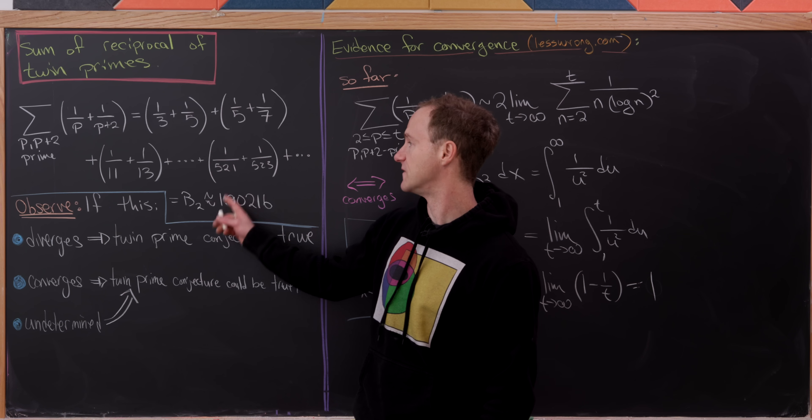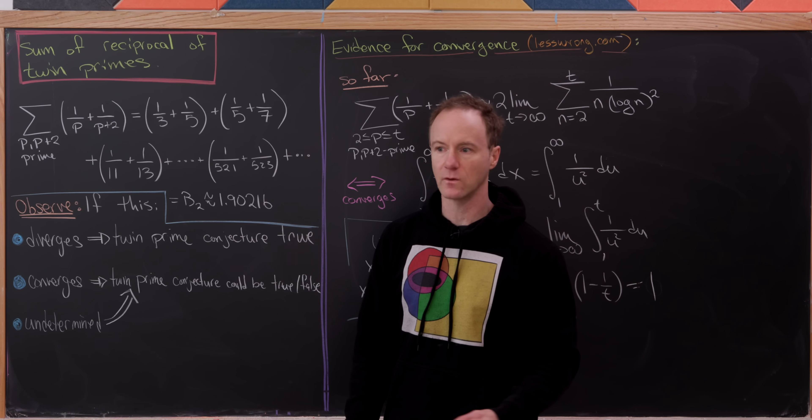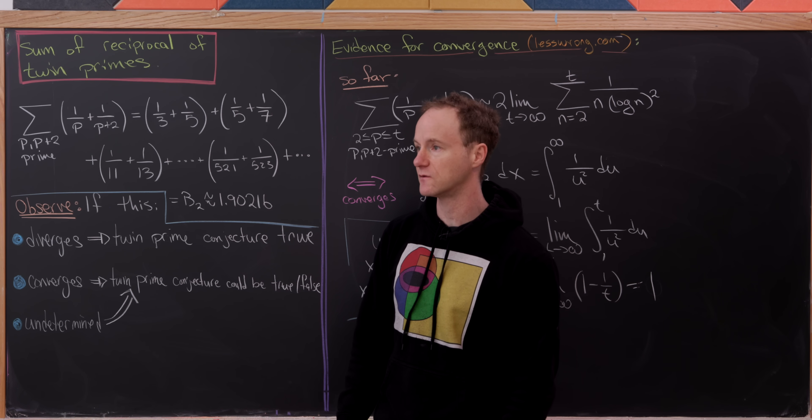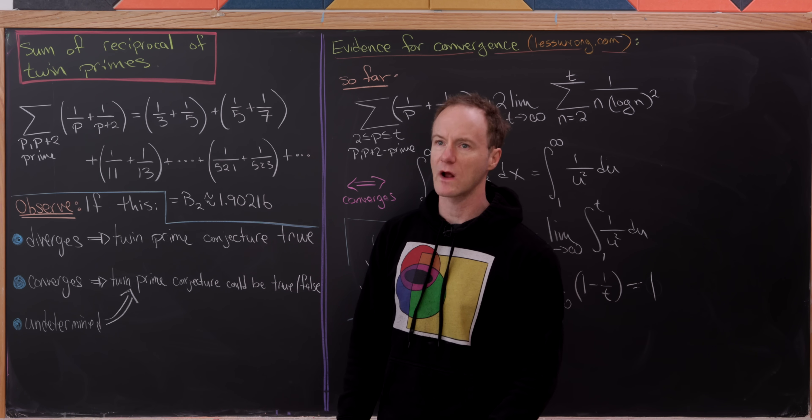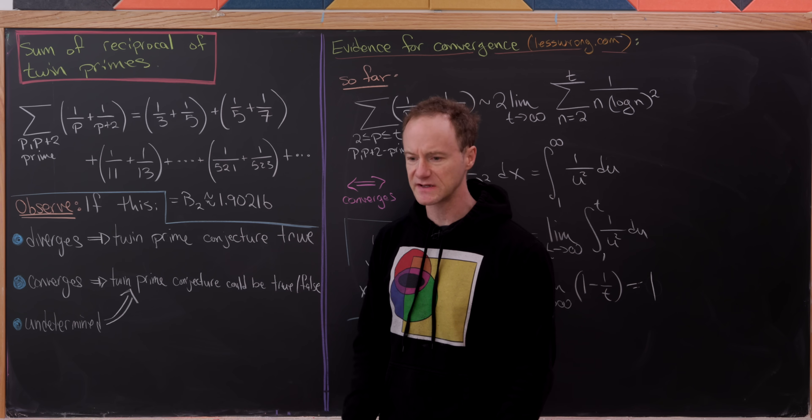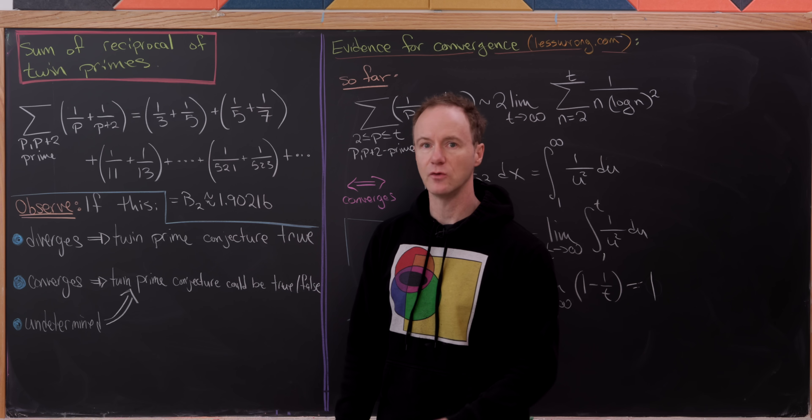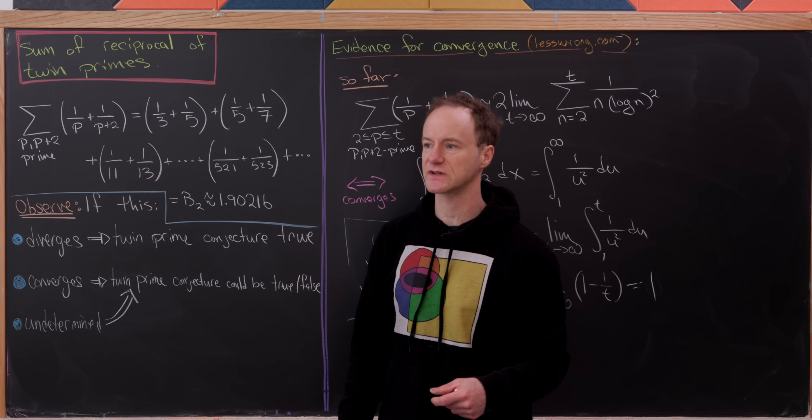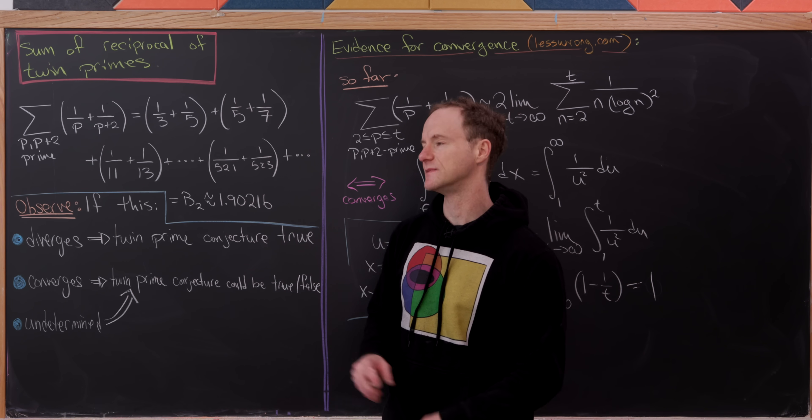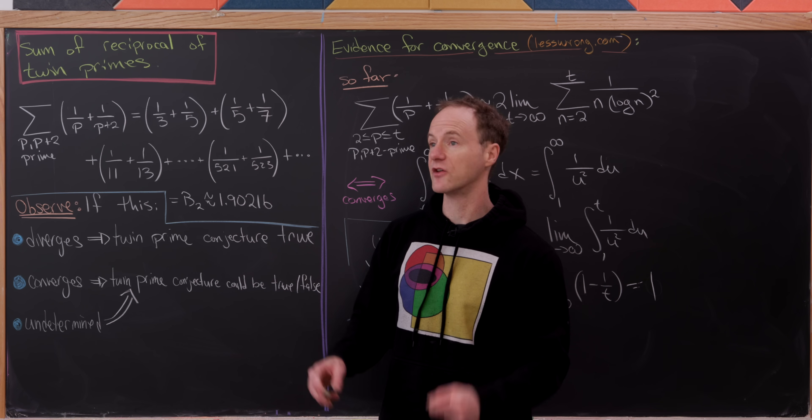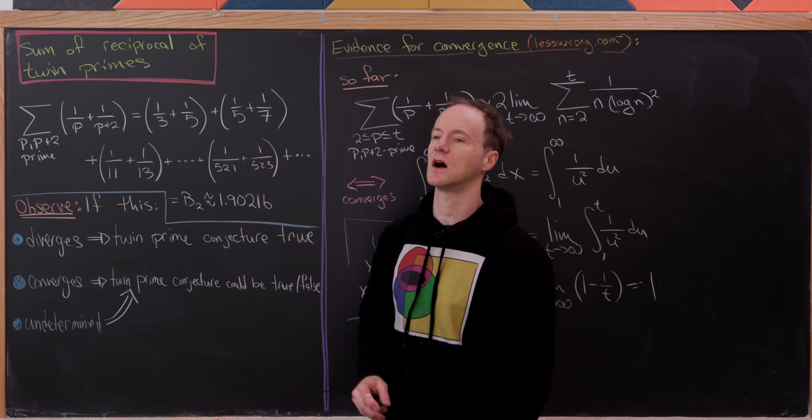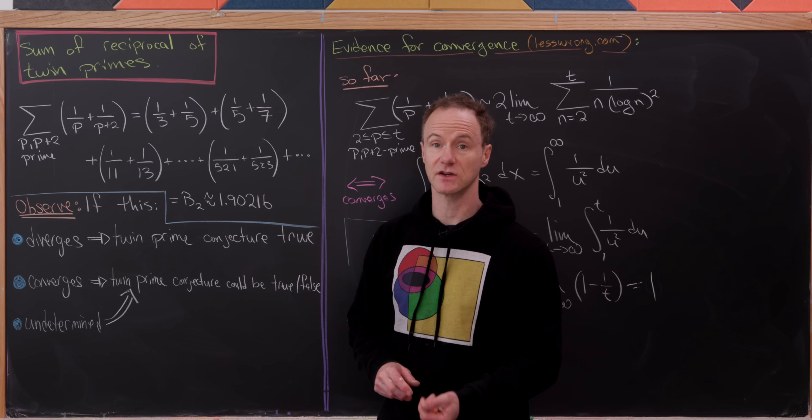So b sub 4 would be the sum of the reciprocals of all cousin primes. I'll let you guys look up the other types of these constants if you're interested. And that's a good place to stop.